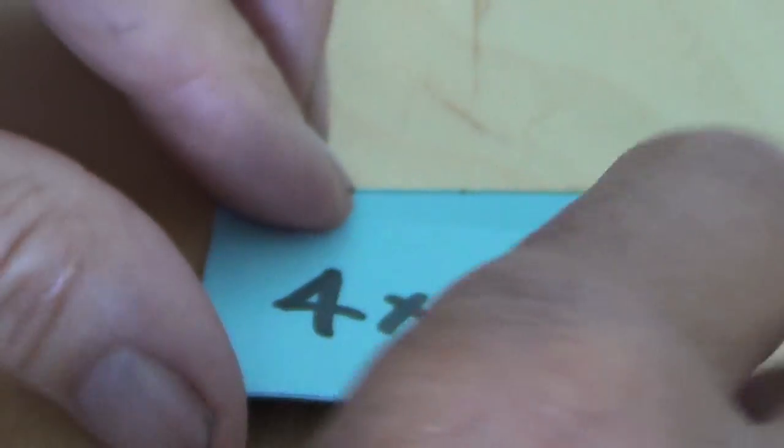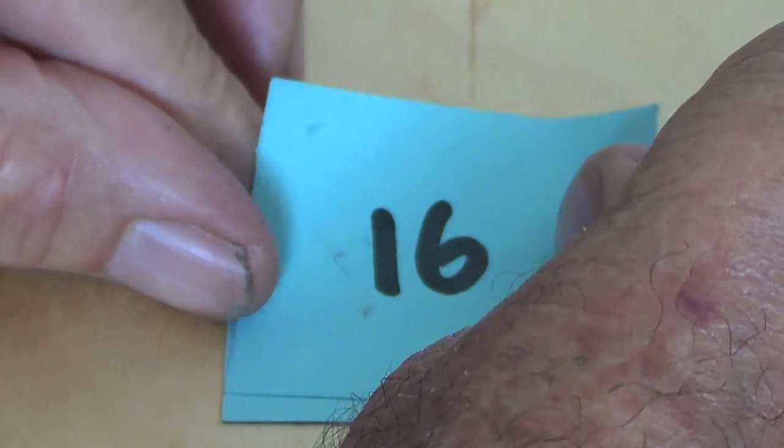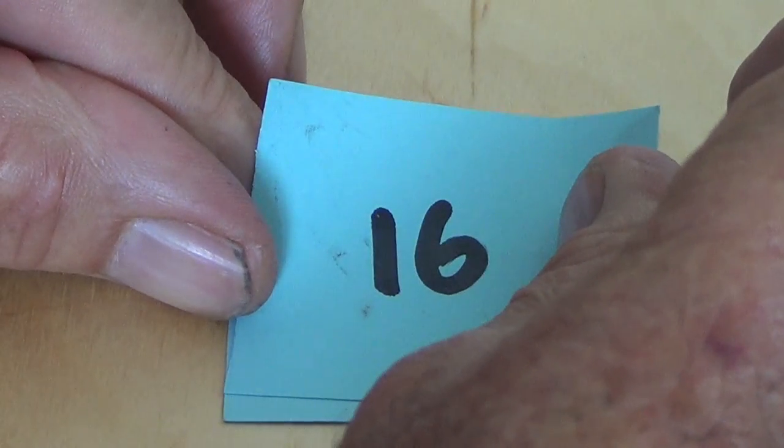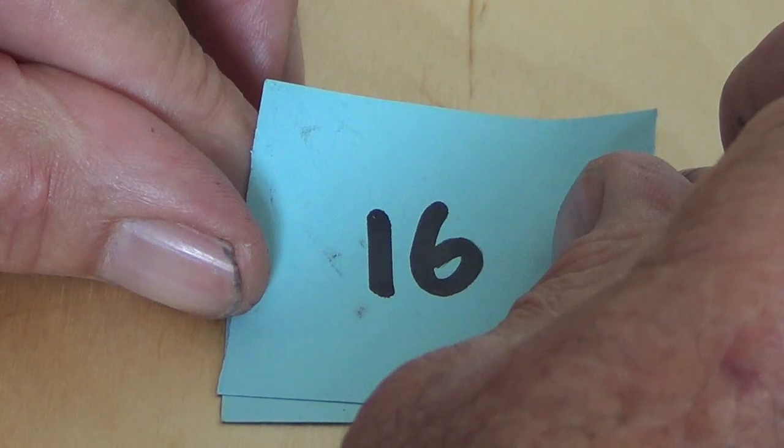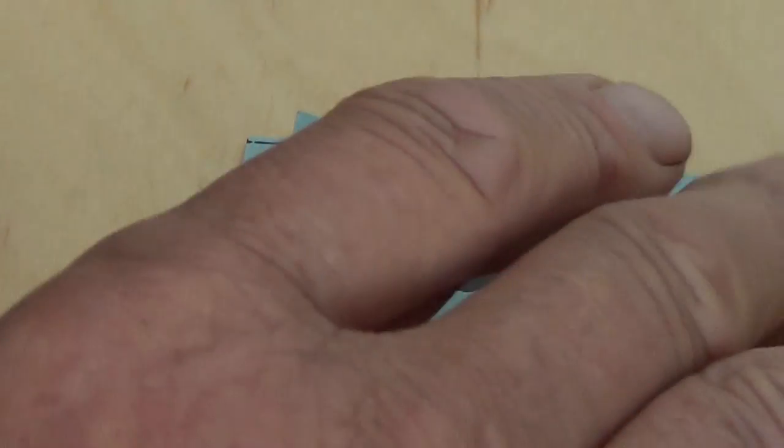You write 4 times 4 on the card. You flip it over. And then you write 16 on the other side. So that's all you have to do. You've got to make sure the answers are upside down on the other side. And we're done.